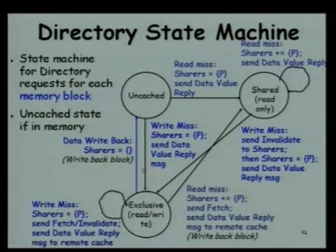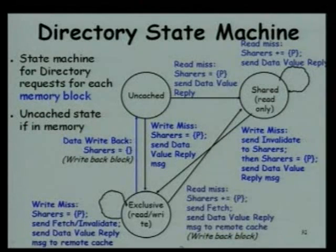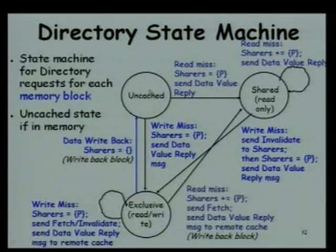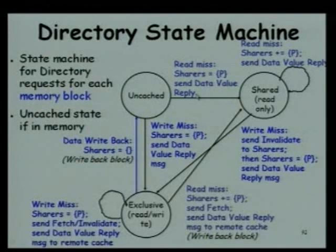The cache can be in three states: uncached, shared, and exclusive. On the side of the nodes, the three states are invalid, shared, and exclusive. If the directory state of the page is uncached and there is a read miss generated by a certain processor P, it makes the sharer set equal to P and sends the data value in reply.